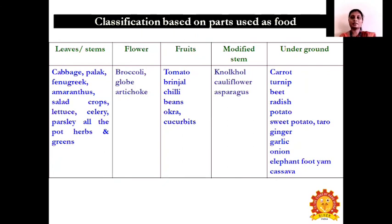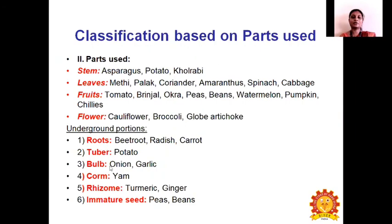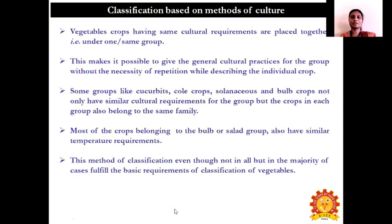Classification based on parts used as food: leaves and stems — edible parts include cabbage, garlic, kangkong, amaranthus, salad crops, lettuce, celery, parsley, and all pot herbs and greens. Flowers used as vegetables include broccoli and globe artichoke. Fruits used include tomato, brinjal, chilies, beans, and sugar beet. Modified stems include kohlrabi, cauliflower, and asparagus. Underground vegetables include carrots, turnip, beetroot, radish, potato, sweet potato, taro, ginger, garlic, onion, elephant foot yam, and cassava. Underground portions are further classified into root crops (beetroot, radish, carrot), tuber crops (potato), corm crops (onion, garlic), rhizome crops (turmeric, ginger), and immature fruit vegetables (peas and beans).